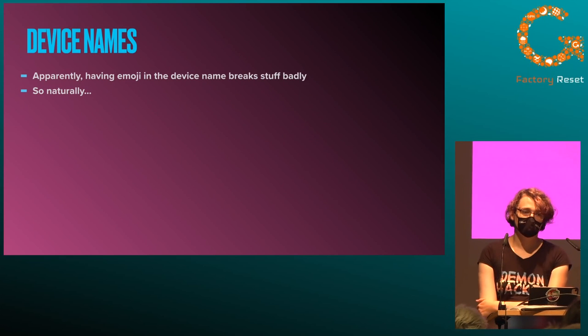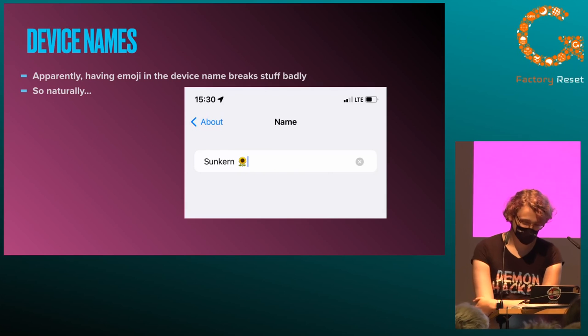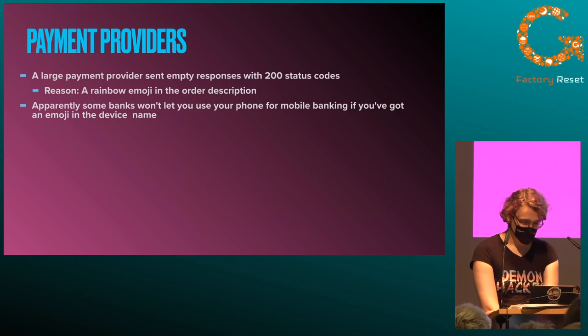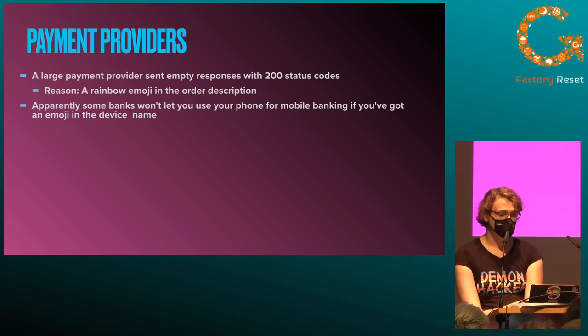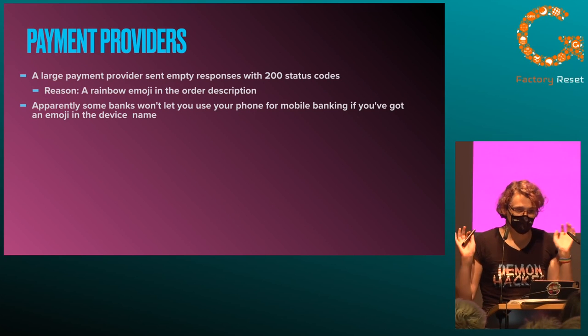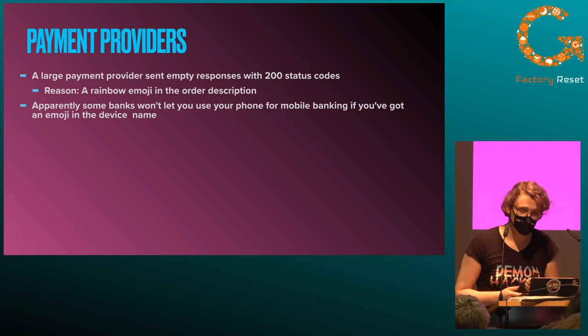Device names seem to break a lot of things if you include emoji in them. Naturally, I changed my phone's device name — so far I haven't found anything, sadly. On the payment provider side, this happened at work: a large payment provider sent empty responses with 200 status codes with no information about what broke. Later we found out from their side that a rainbow emoji in the order description seemed to be the cause — once that was removed, it worked again. Apparently some banks won't let you use online banking on your phone if you've got an emoji in the device name. That's definitely a sign of very stable backend code that you want to trust with your money.